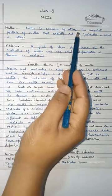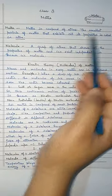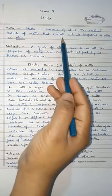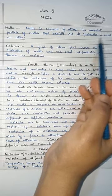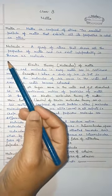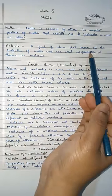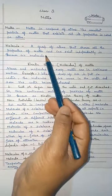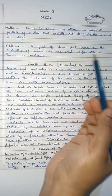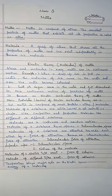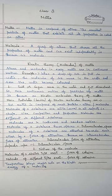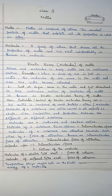Matter is composed of atoms. The smallest particle of matter that exhibits all its properties is called an atom. Now, what is a molecule? A group of atoms that shows all the properties of matter and can exist independently is known as molecule. You already know about atoms, molecules and everything.